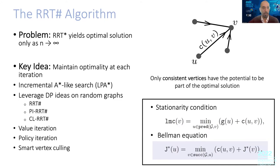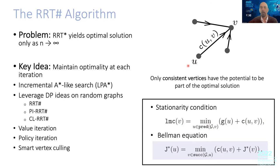Essentially, there is a way to keep track of some information in your current path that will allow you, when you do replanning, to do the minimum replanning in some sense. It is based on having two values of the cost to come — your distance from the root. This is what is called the LMC value, and the G value. These are the two values you want to keep track of, and you impose the so-called stationarity condition.